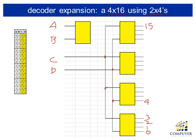The four decoders are working simultaneously: one decoder represents outputs 0–3, another represents outputs 4–7, the next represents outputs 8–11, and the last represents outputs 12–15. To collectively achieve a 4-by-16 decoder, we need to select only one of the four decoders depending on A and B.